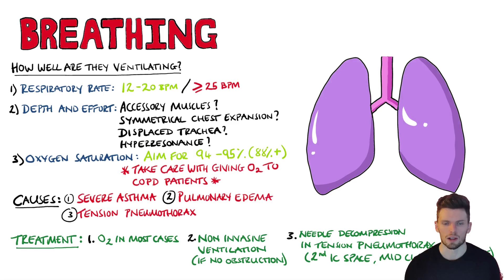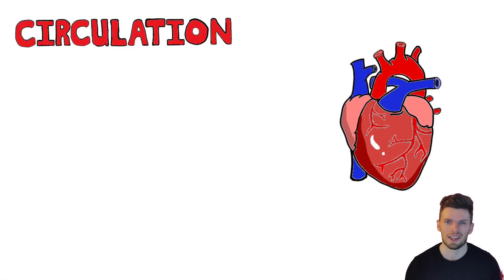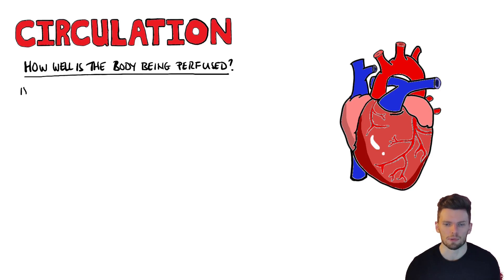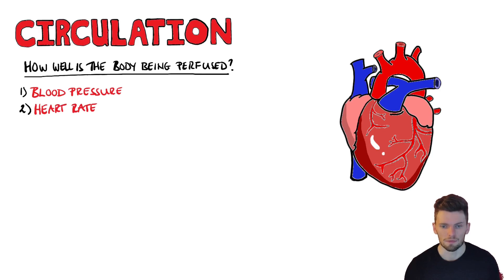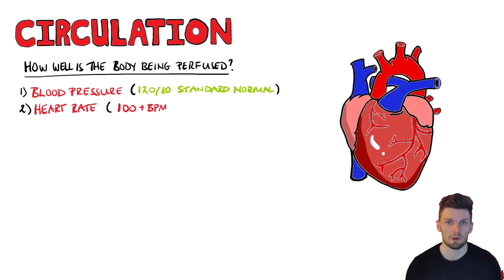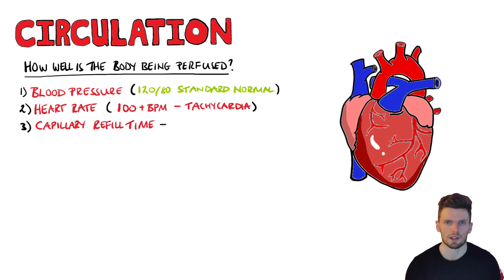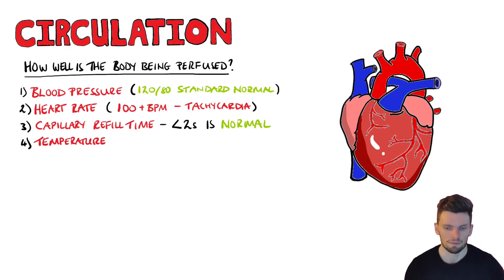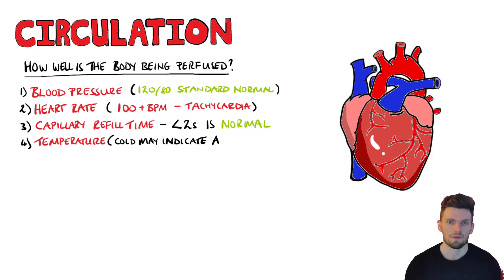Next, C is for circulation, assessed after evaluating the airway and breathing. Here we're assessing cardiac output — how well the body is being perfused. Two big indicators are blood pressure and heart rate; a low blood pressure and tachycardia are indicators that a patient may be deteriorating towards shock. Other markers include capillary refill time, where you squeeze a fingertip for five seconds and look for how quickly the colour returns — a normal CRT is under two seconds. You may also look at temperature and, if catheterised, urine output.